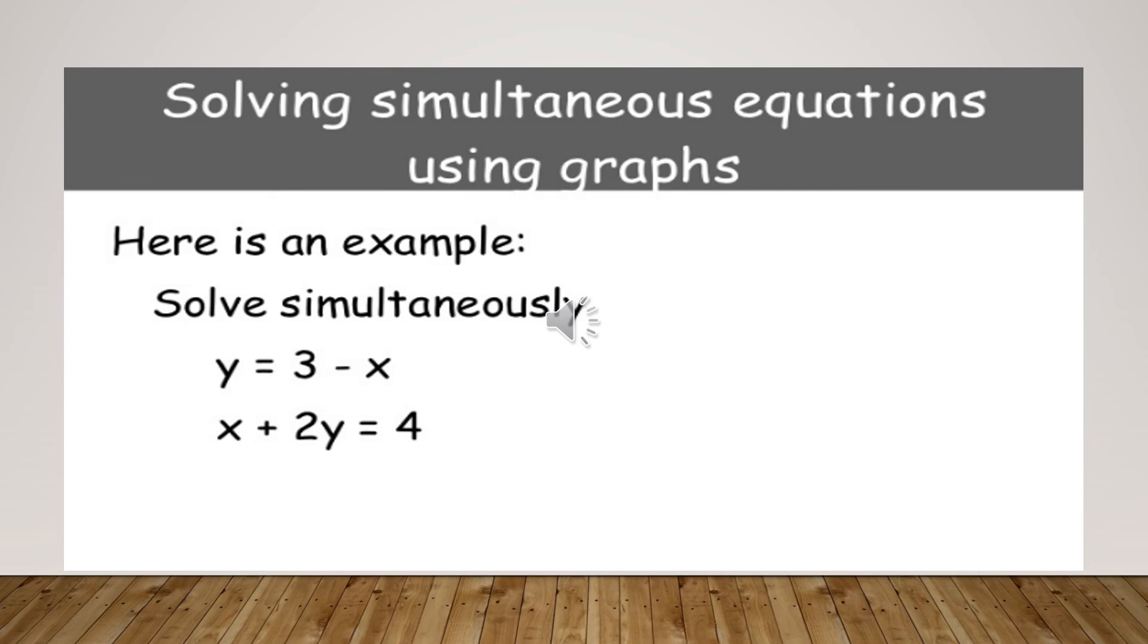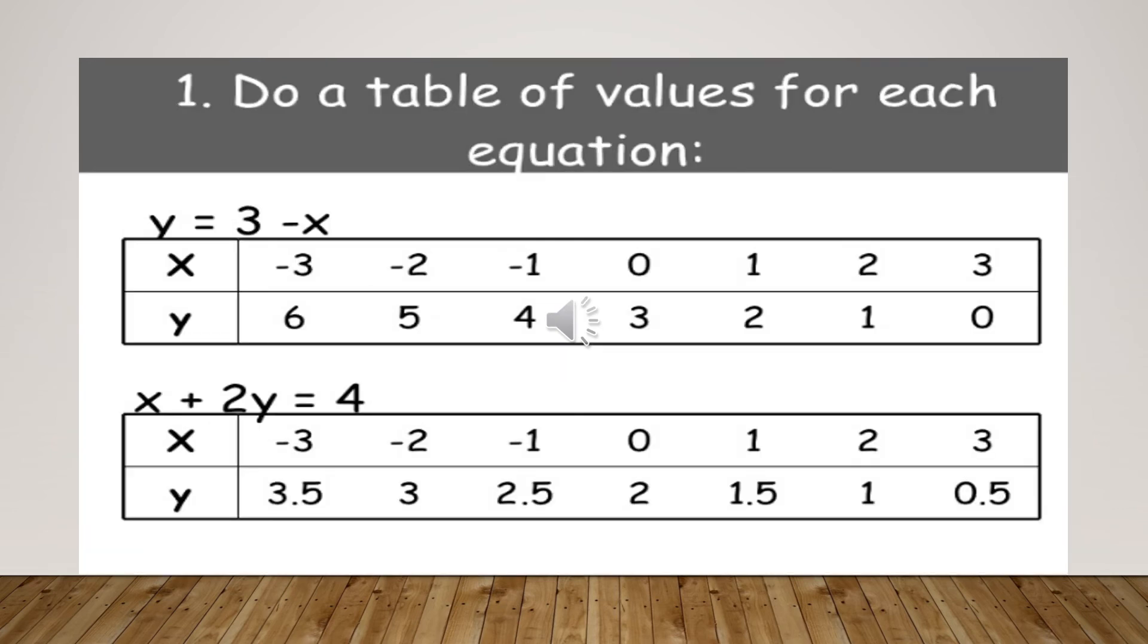Equation is given, y is equal to 3 minus x, x plus 2y equals to 4. In this way, you are just going to draw the table for the values. It means that if you are placing the value of x as minus 3, so 3 minus and then minus, minus minus plus, means 3 plus 3 equals to 6, means the value of y is 6. In the next, you can put the value minus 2, minus 1, then 0, then 1, then 2, then 3. The same you are going to do with the next expression, that is x plus 2y equals to 4. One by one, you just are going to place the value of x and then you get the value of y.